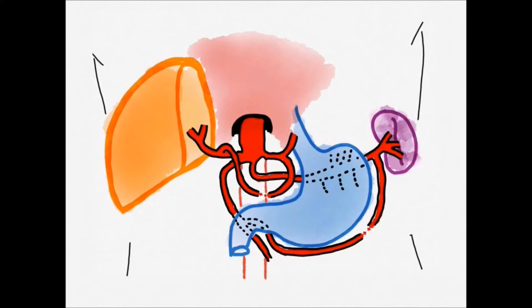Today I'm going to go through the third major branch of the celiac trunk, the common hepatic artery. Let's have a look at it.